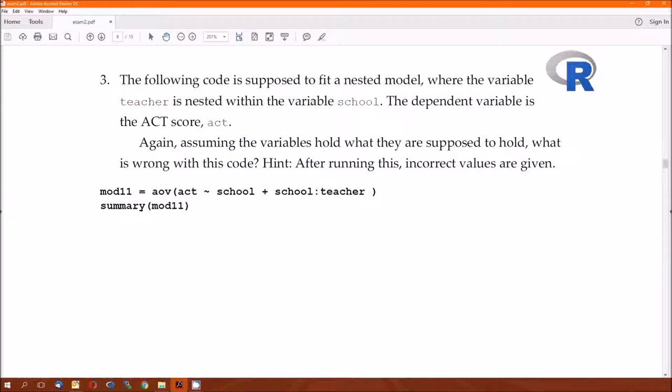Three: It's supposed to fit a nested model where the variable teacher is nested inside of school, and the variable is the ACT score. What's wrong with this code? Here's what's wrong. No incorrect values are given. Go back over the nested model video. The AOV function, the F statistics will be divided by the mean squared error, which is the wrong thing to divide by. So you either need to do it by hand or use the LMER function, which is in the LME4 package. Two possible answers. I think about half of you gave me both answers. Good job.